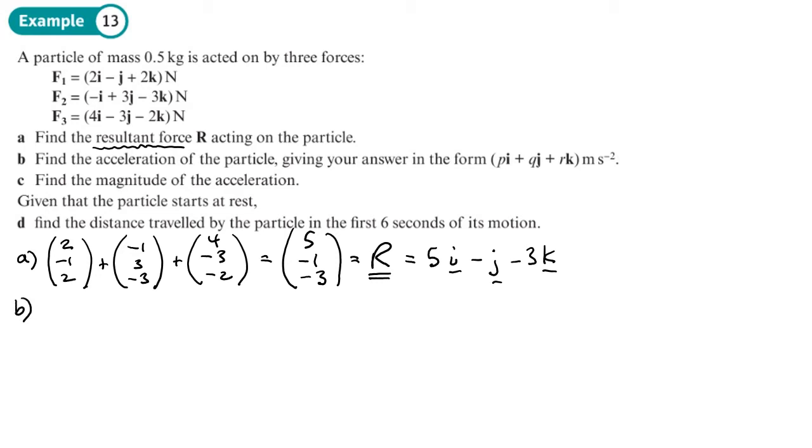Part b, find the acceleration of the particle. We're given the mass of the particle up here, so we just use F equals ma using vectors. So the resultant force is (5, -1, -3) equals the mass 0.5 times by the acceleration.